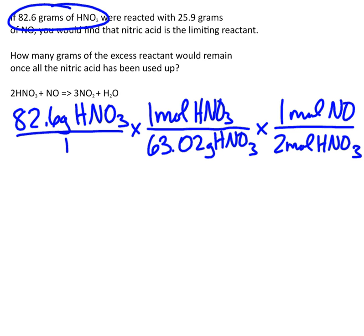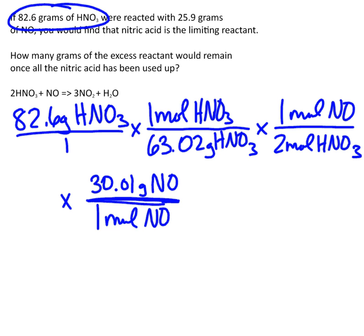And I'm going to continue it down here. And I see that I have one mole of NO is going to be 30.01 grams of NO. And this right here should give me the amount of NO that's going to be reacting with the 82.6 grams of nitric acid. So I'm going to go ahead and do the math.